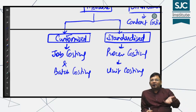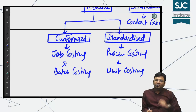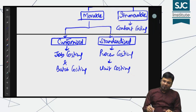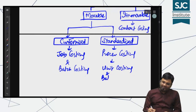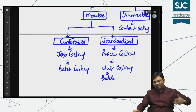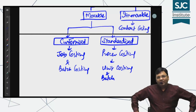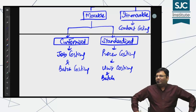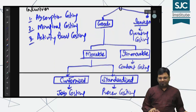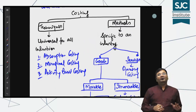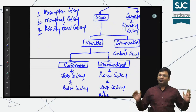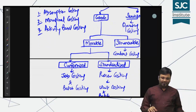जैसे आप एक puttapajama बना रहे हो, तो वो job costing होगा। Standardized में unit costing भी हो सकता है और batch costing भी — basically process costing ही original नाम है। तो job costing, process costing, batch costing, unit costing — ये सब आपके syllabus के chapters हैं। Do you understand? In the syllabus there are so many chapters।